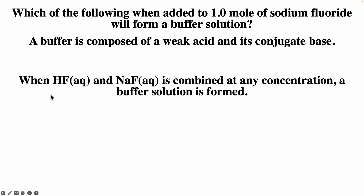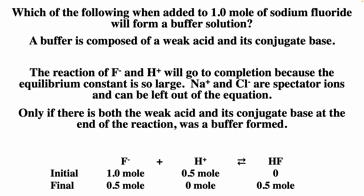When HF and NaF are combined, there's no reaction, but you have weak acid (HF) and conjugate base (F⁻) — you can ignore the sodium since it's neutral. For F⁻ plus H⁺: as long as we don't consume all the F⁻, we get a buffer. Starting with 1 mole F⁻ and 0.5 moles H⁺, H⁺ is the limiting reagent, and we end up with 0.5 moles F⁻ and 0.5 moles HF — weak acid and conjugate base, a buffer solution.